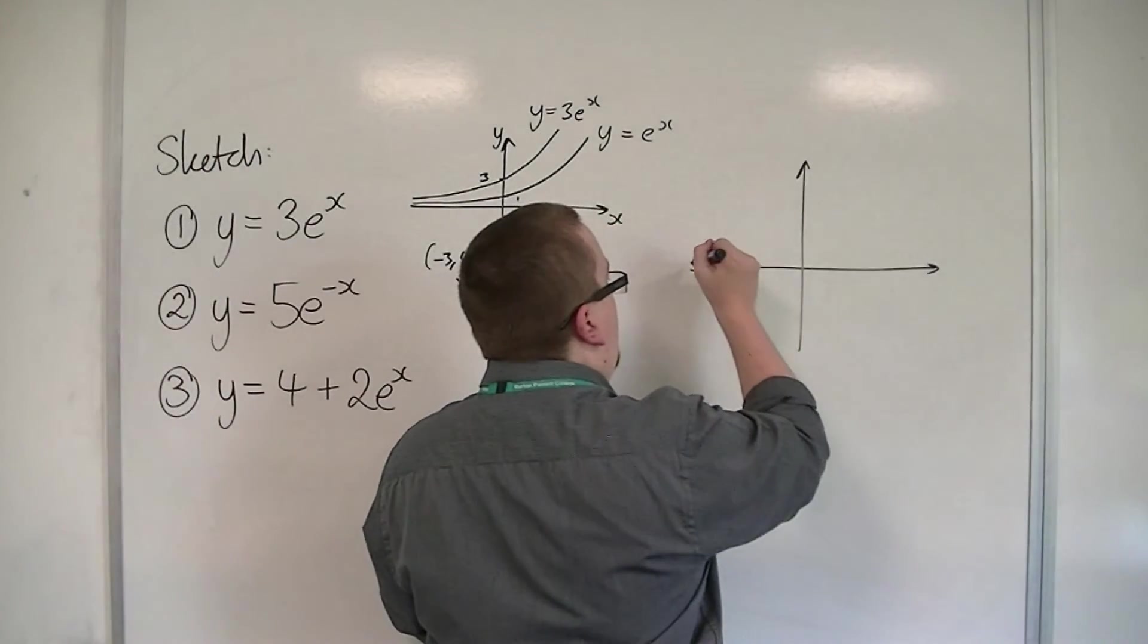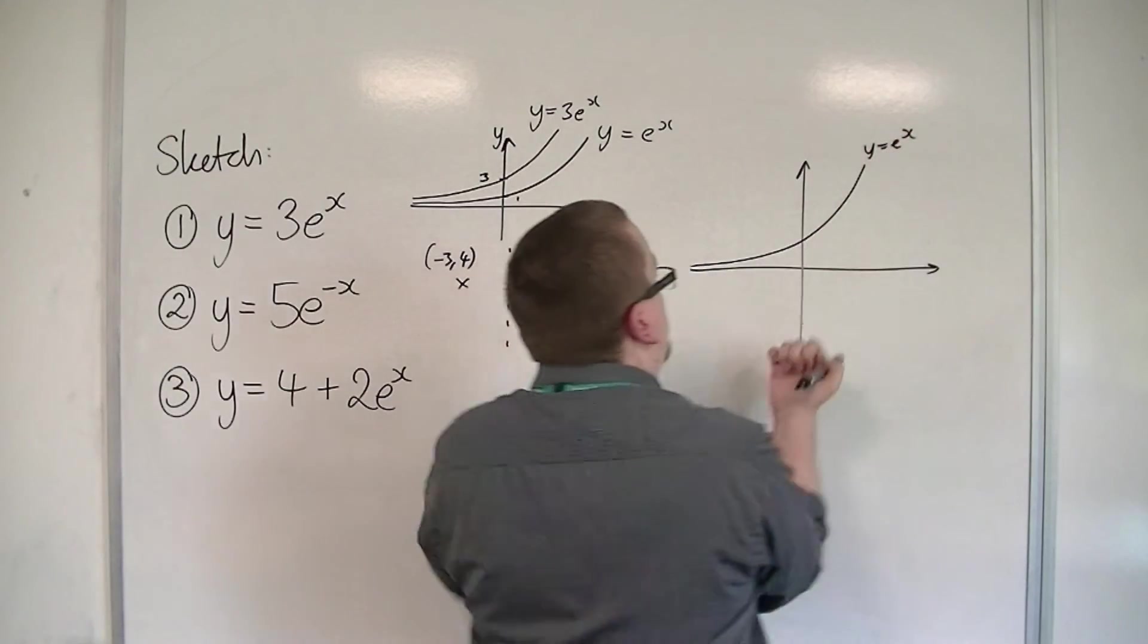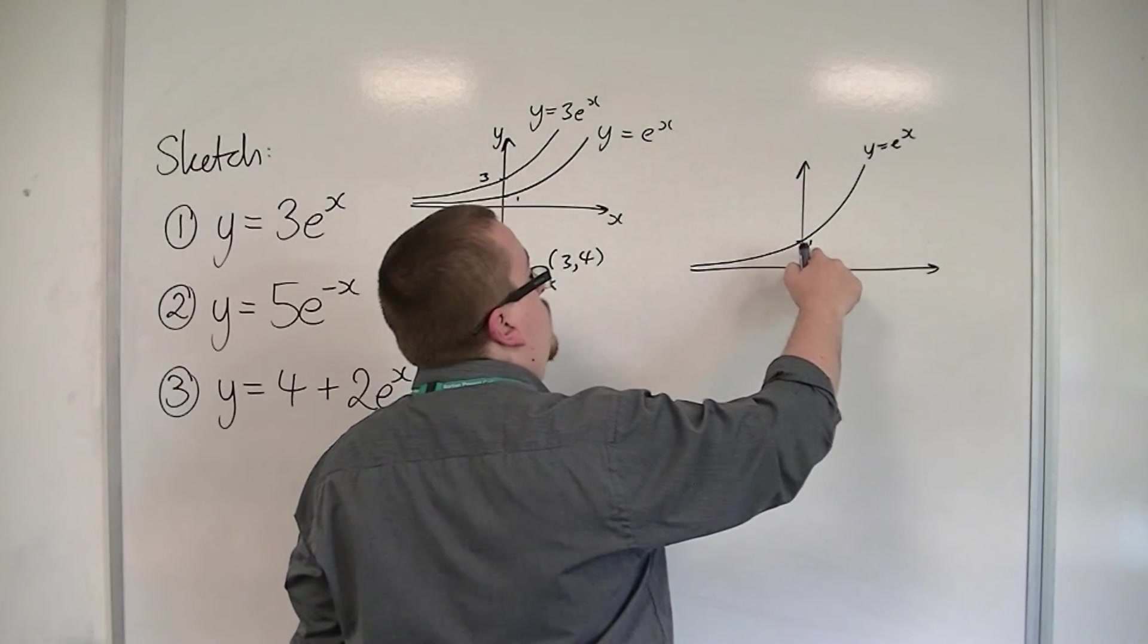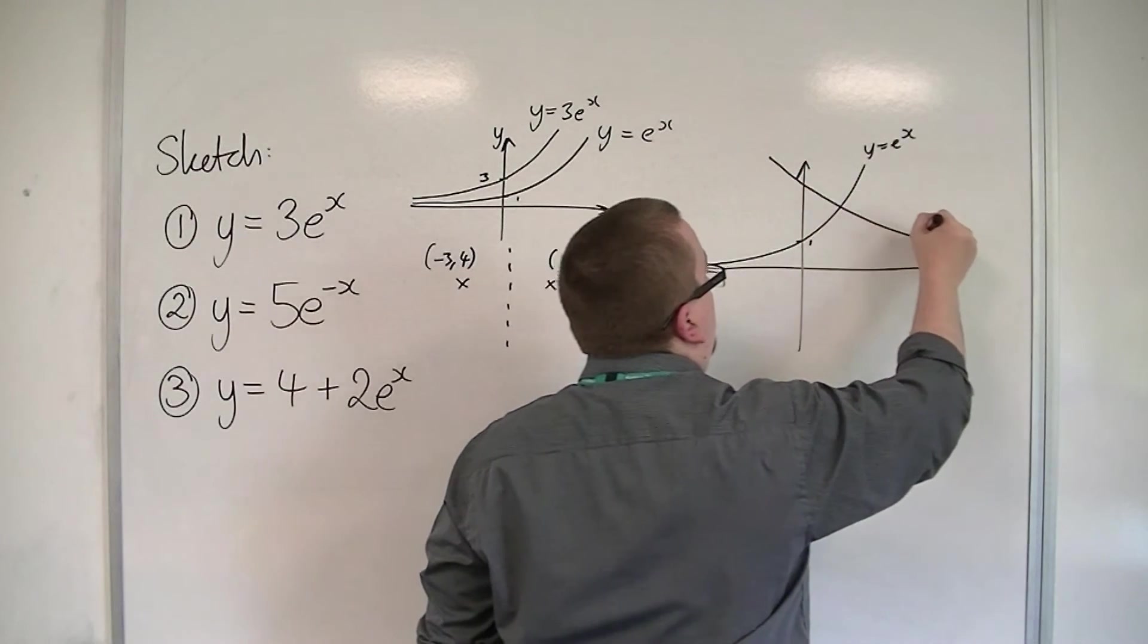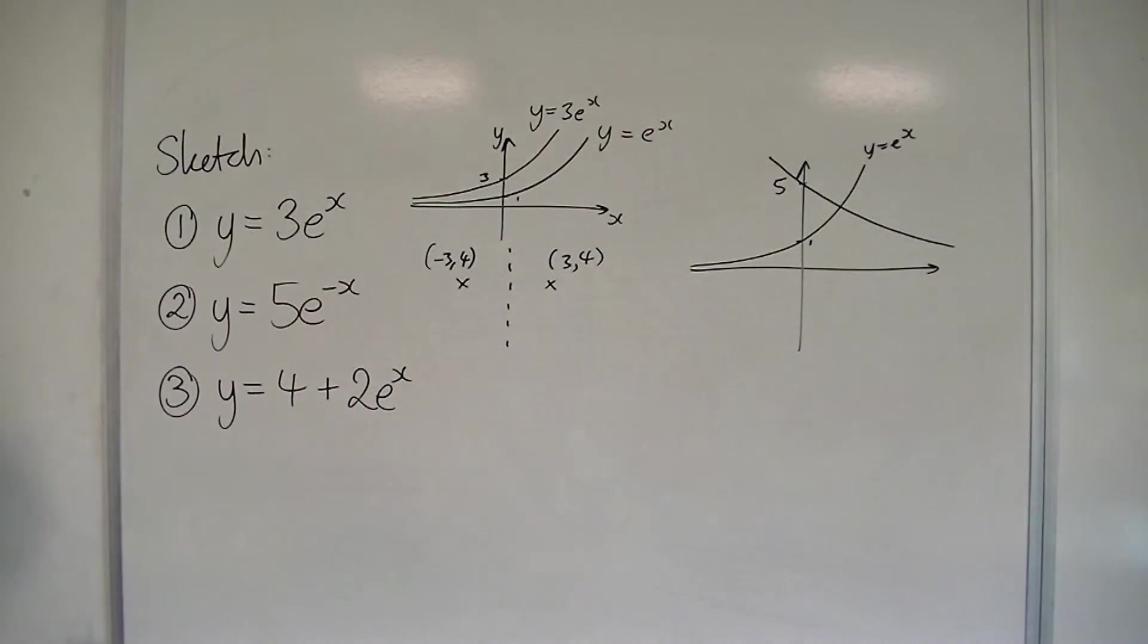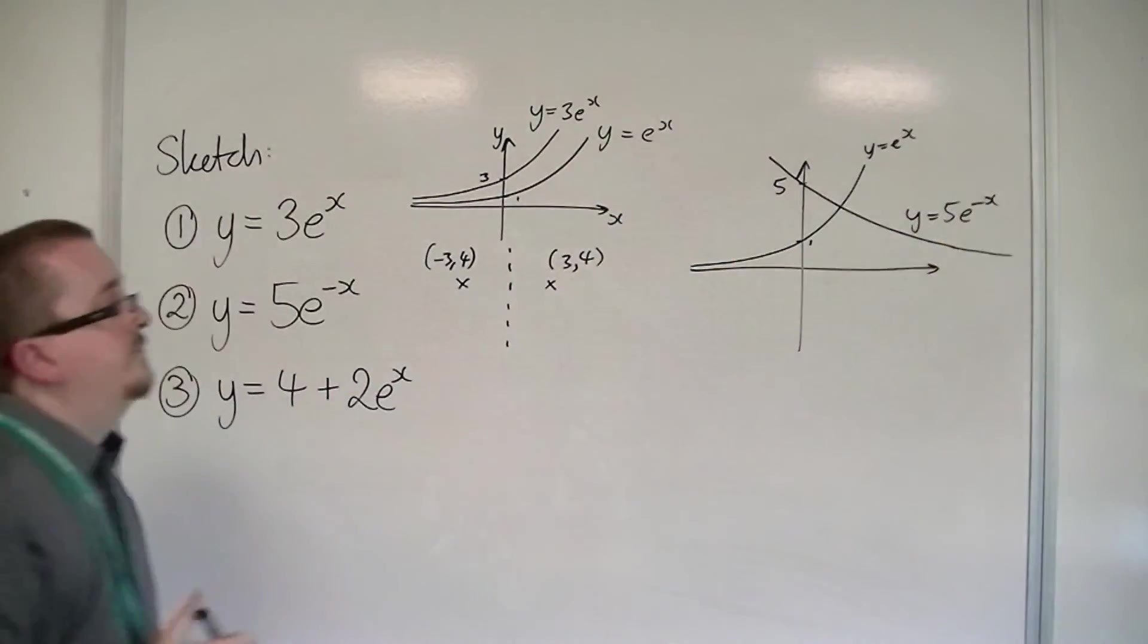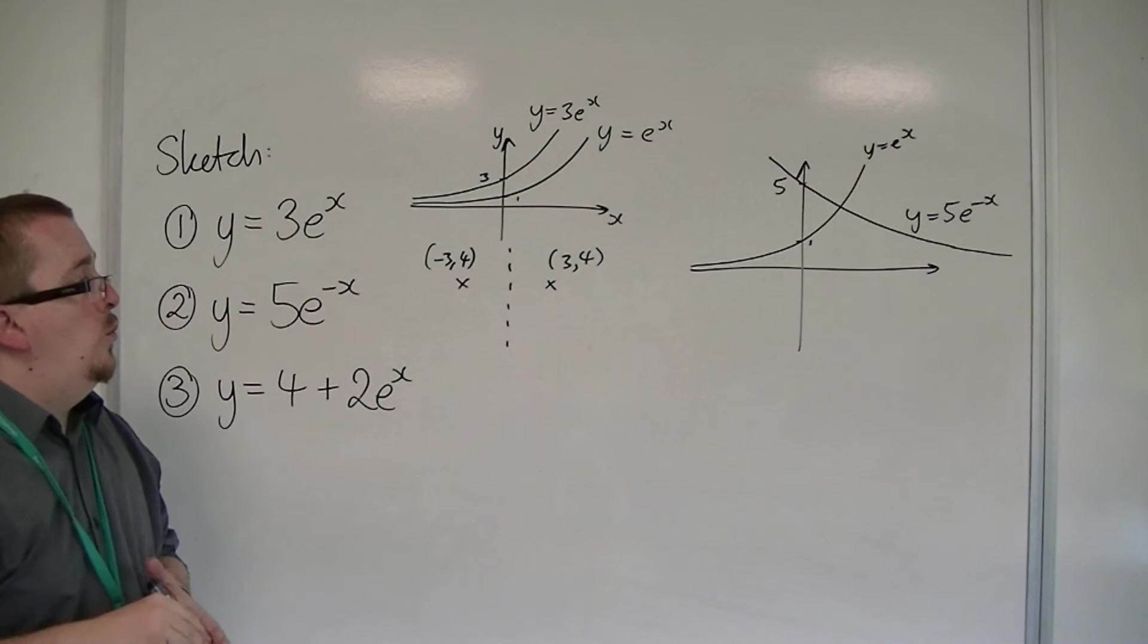So not only has my original curve of y = e^x been stretched upwards, but it's also been reflected in the y-axis. And although it would originally go through 1, it would now be going through 5, but coming from this direction instead. So this would be y = 5e^(-x).